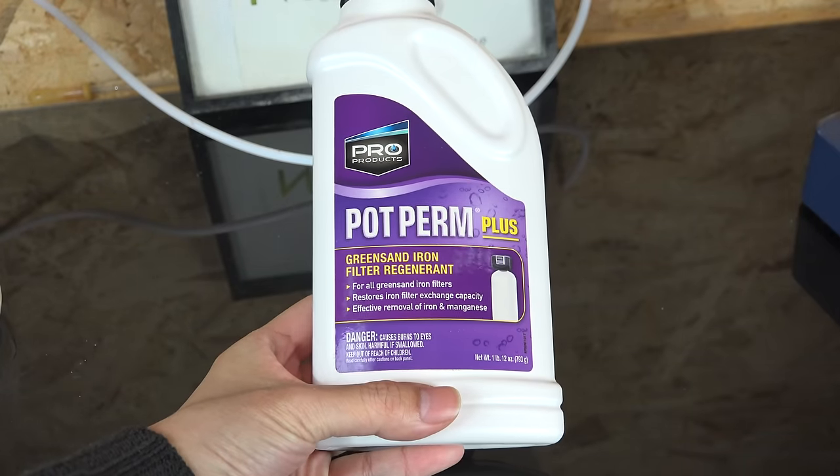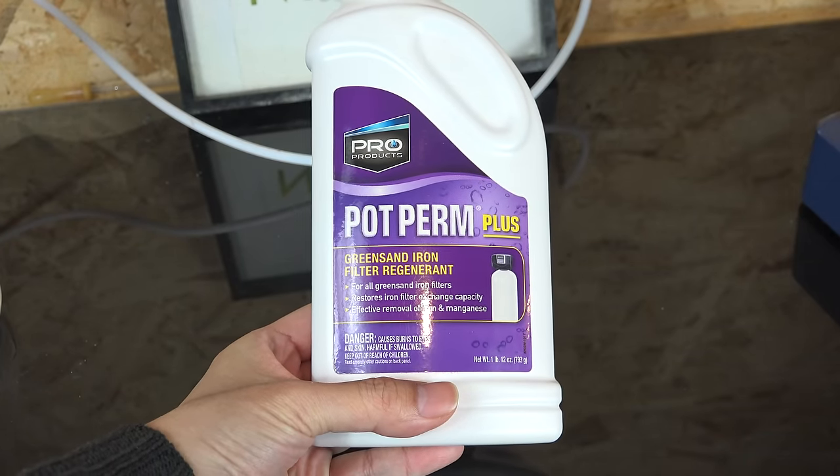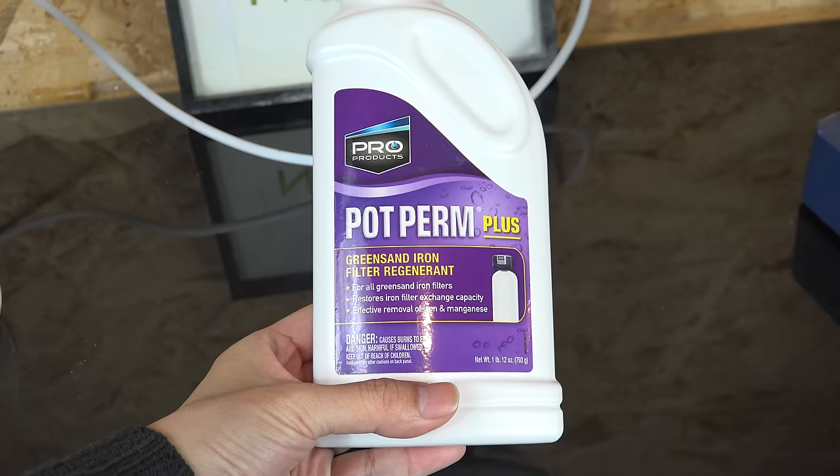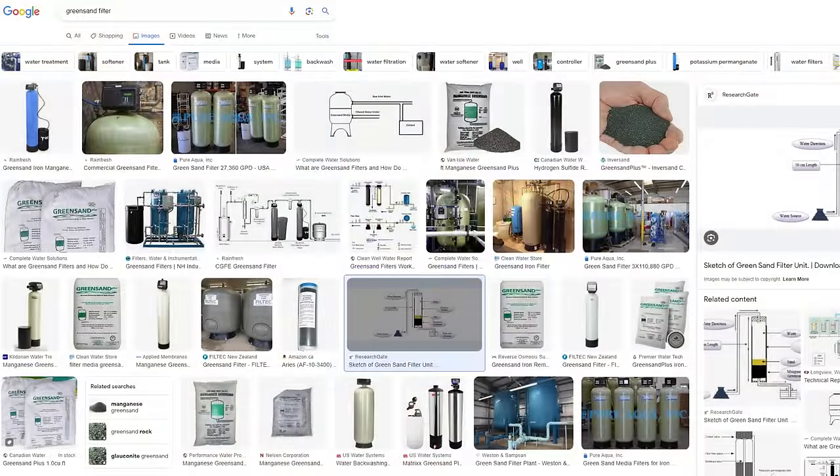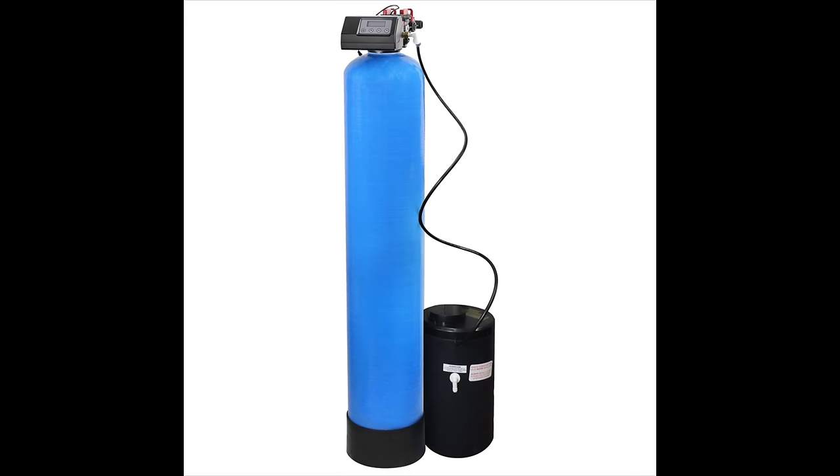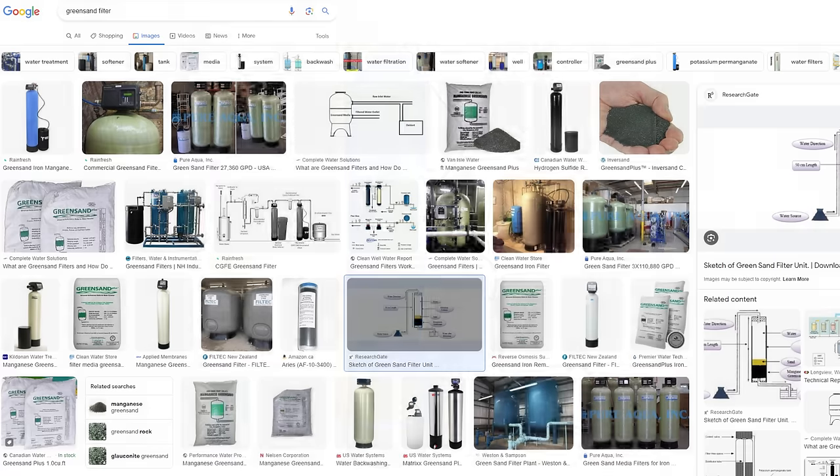Now for our titrant potassium permanganate. My source is this commercial green sand filter regenerant. For those who don't know, green sand filters are used by individual households to remove redox active contaminants in water like iron, manganese and hydrogen sulfide.